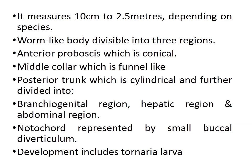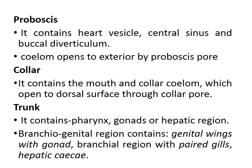The notochord, once considered similar to the chordate notochord, is actually a small buccal diverticulum. Development is indirect and includes tornaria larvae. The proboscis contains heart vesicles, a central sinus, and buccal diverticulum, and the coelom opens to the exterior by the proboscis pore. The collar contains the mouth and collar coelom, which opens to the dorsal surface through the collar pore. The trunk contains the pharynx, gonads, and hepatic region, including the branchial-genital region with the genital organs, gills, and hepatic sacs.